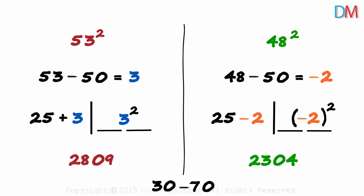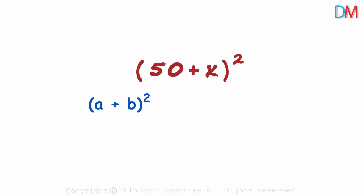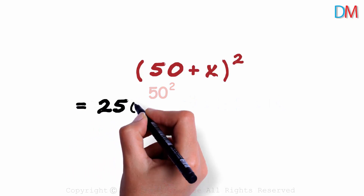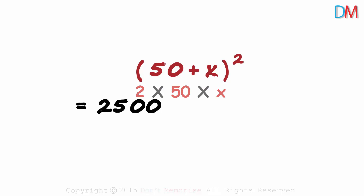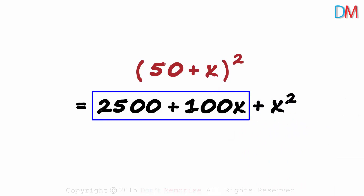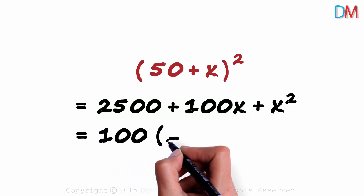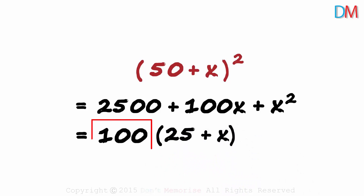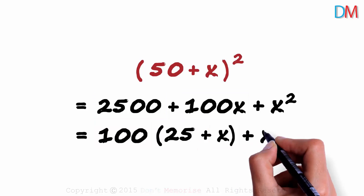But do you know the logic behind this technique? Let's understand it. Any number which is close to 50 can be written as 50 plus x, where x can take a positive or a negative value. We are squaring this number. We know the identity: (a + b)² equals a² plus 2ab plus b². Here, 50 squared will be 2500, 2 times 50 times x will equal 100x, and squaring x gives us x squared. Now if you look at the first two terms, 100 is common to both of them. So we take the common term 100 out, and we will have 25 plus x in brackets.